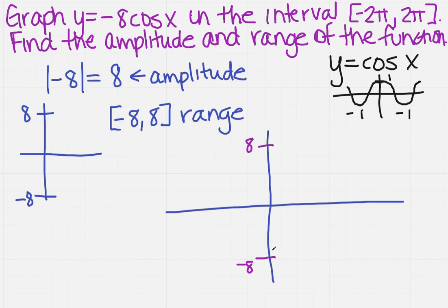What does the negative tell us? Well, the negative tells us that we have flipped the cosine around the x-axis. So that means instead of having our point up here at positive 1, it's now going to be at negative 8.